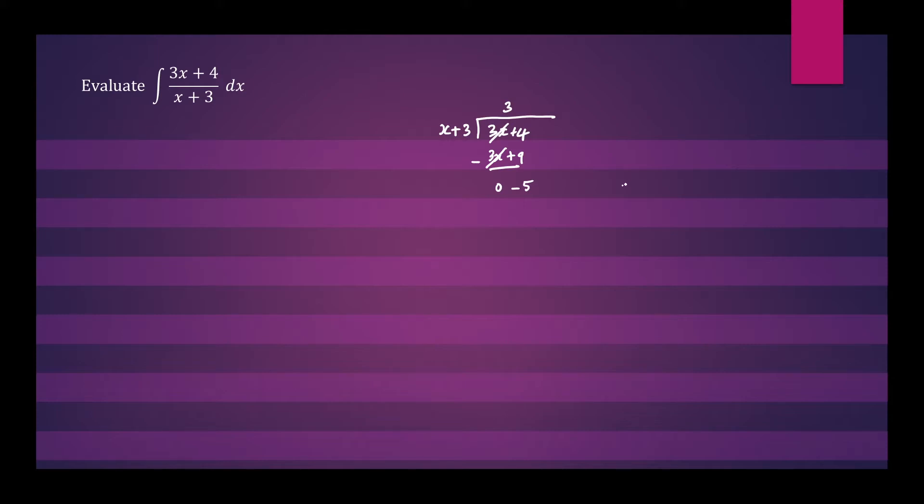So we could rewrite the problem as 3 minus 5 divided by x plus 3. So let's write that down again. We have 3 minus 5 over x plus 3 dx.